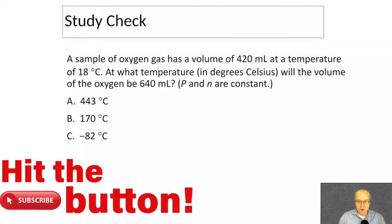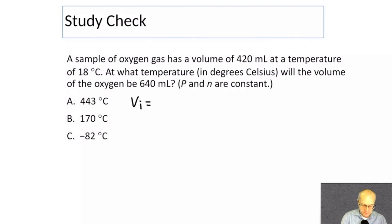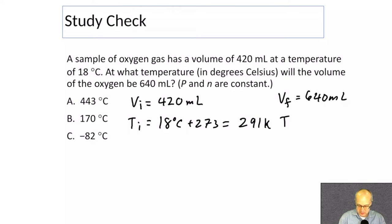Sample of oxygen has a volume of 420. So Vi 420 milliliters. Ti equals 18 degrees Celsius plus 273 equals 291 Kelvin. Vf equals 640 milliliters. Tf is what we don't know. And it says very clearly in the question in degrees Celsius. So write a little note right there. We have to convert to Kelvin and then out of Kelvin. Okay? Because remember, gas laws are always done in Kelvin. Always.